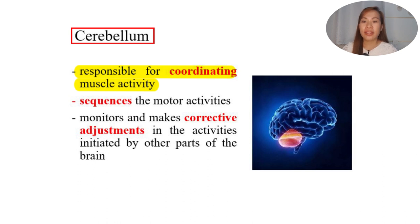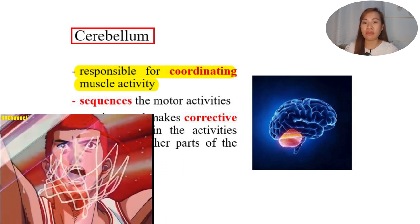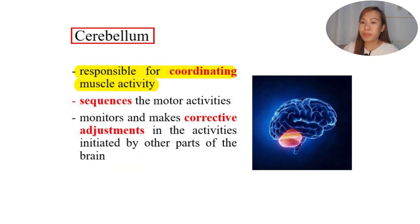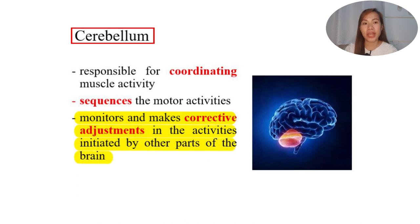The cerebellum coordinates muscle activity. If there is no coordination, the movement will not be done in the way we want. For example, if you want to shoot a ball, there must be coordination in the movement of the upper extremities with that of the lower extremities and the center portion of the body. So for a basketball player, it is really important to have the cerebellum intact to coordinate activities. Second, it also sequences motor activity — the correct sequence must be put into motion to achieve a perfect shot.